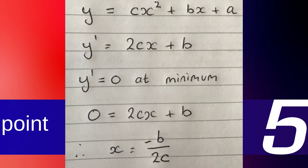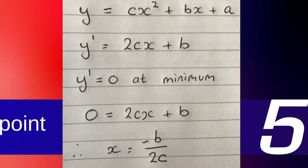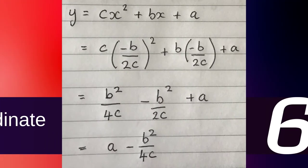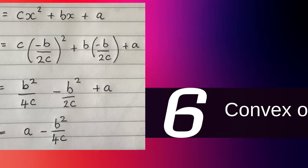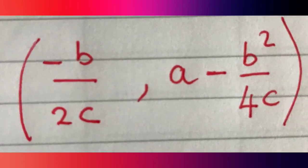Now that we have the x-coordinate of the turning point, we can find the y-coordinate by substituting x equals minus b over 2c back into y equals cx squared plus bx plus a. Doing that, we get y equals a minus b squared over 4c. So the minimum point on the graph has coordinates (minus b over 2c, a minus b squared over 4c). We've gone to that trouble because we're going to use it.